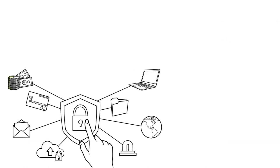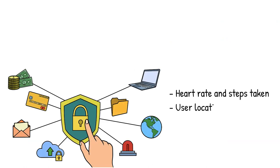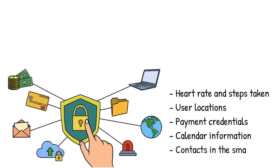The information collected by IoT services can include personal health metrics like heart rate and steps taken, but also user locations, payment credentials, calendar information and contacts in the smartphone.